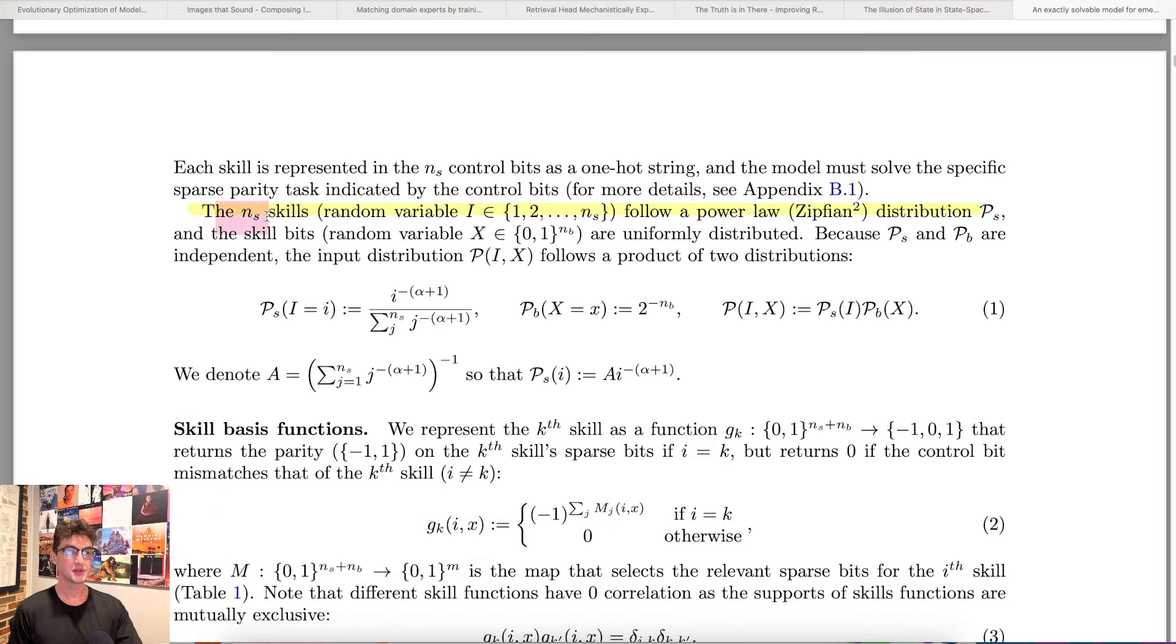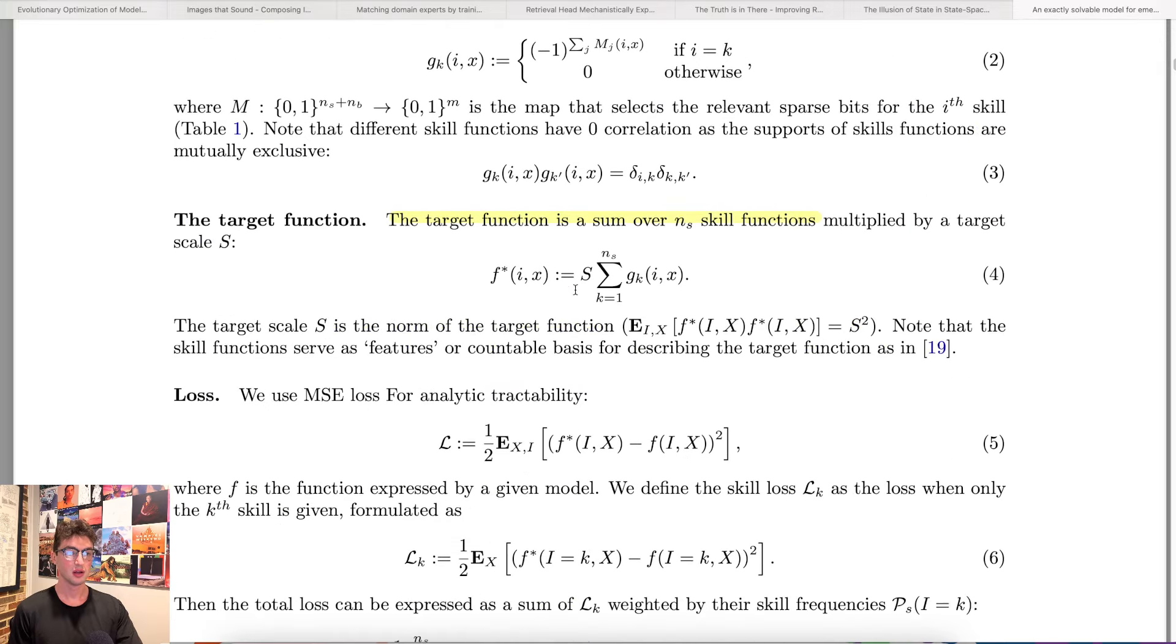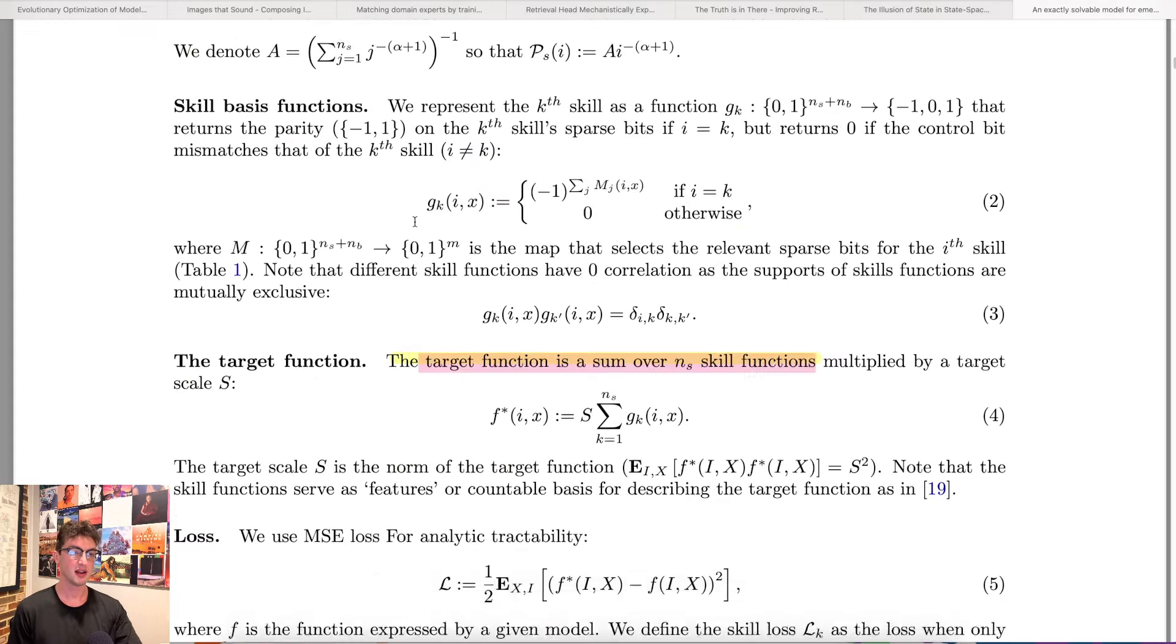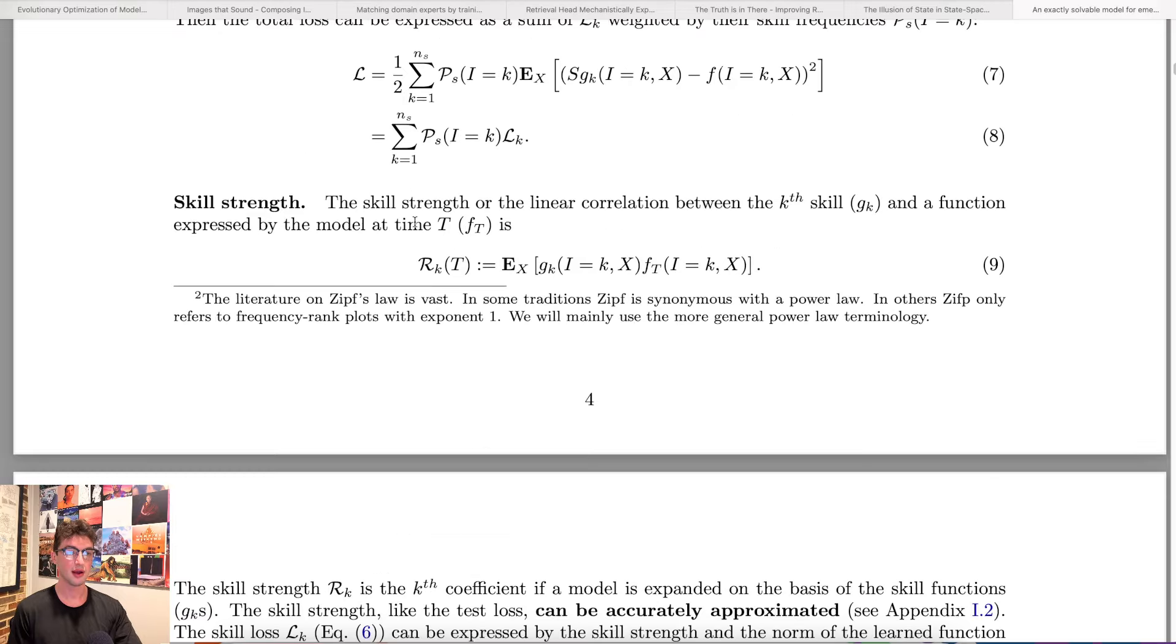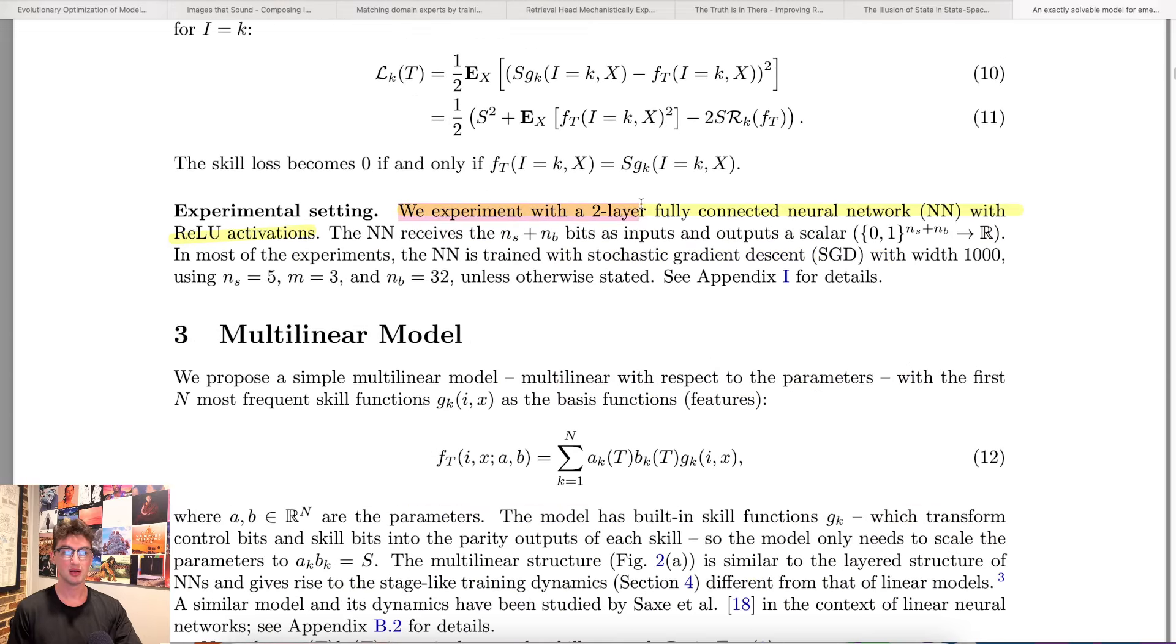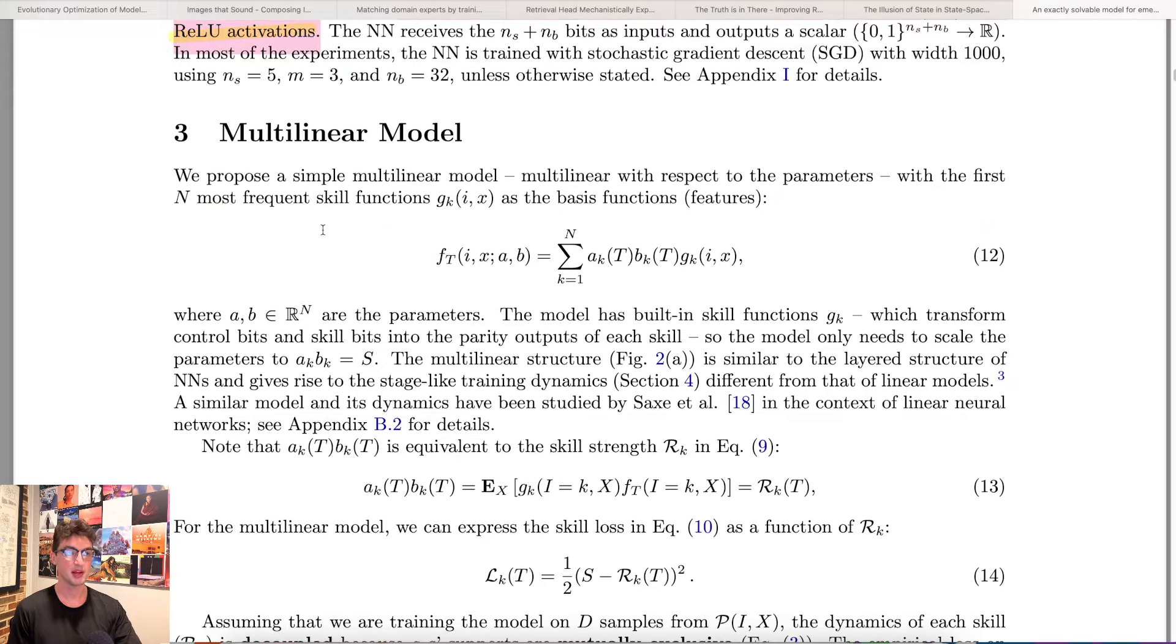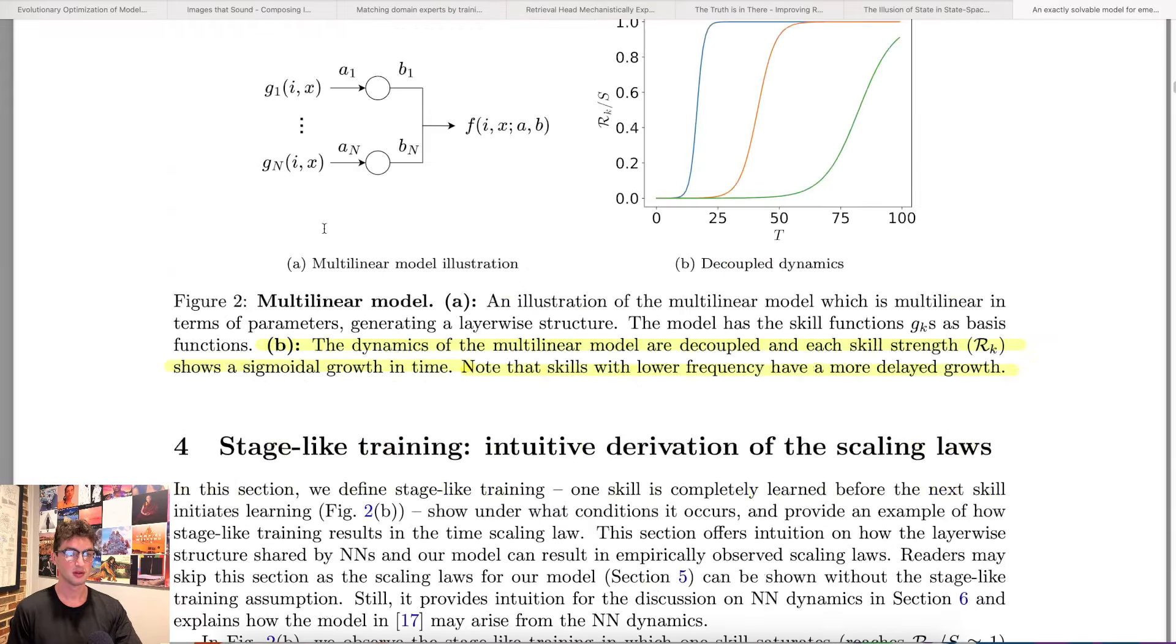The number of skills follow a power law distribution, said that earlier. The target function is a sum over all skill functions. We're just defining the actual experiment here. I think it's an experiment, maybe it's just a theory of derivation. I forget which honestly, this paper was read a while ago by me, not recently. But basics of the setup, skipping the over the actual complex math. And we experiment with a two layer fully connected neural network with ReLU activation. So very simple setup.